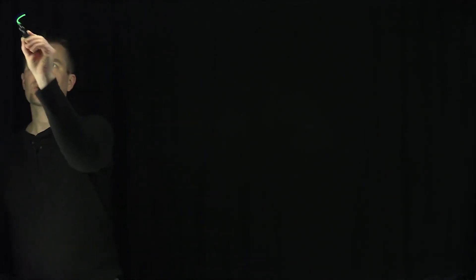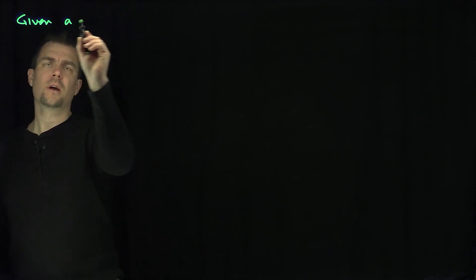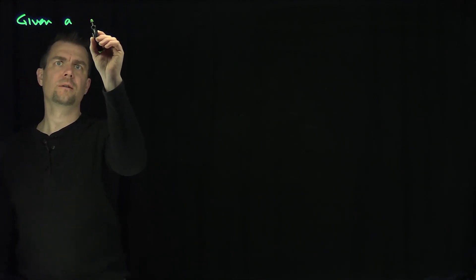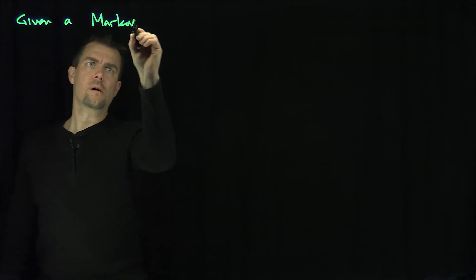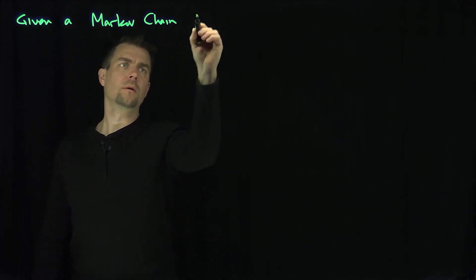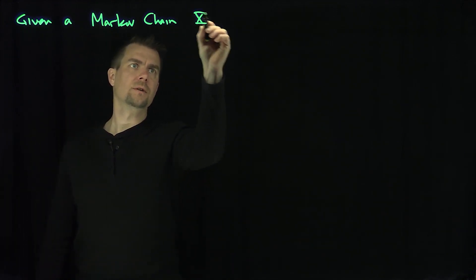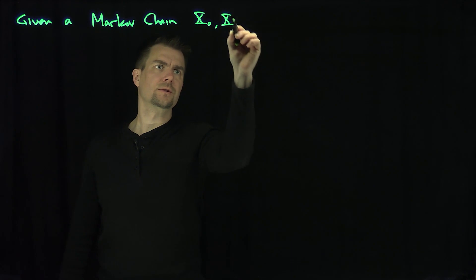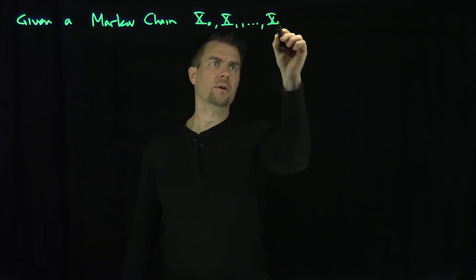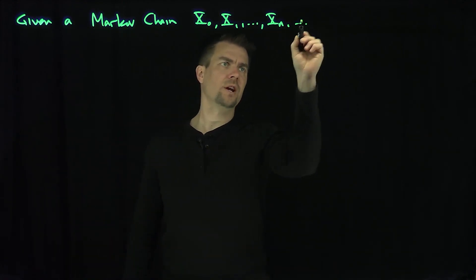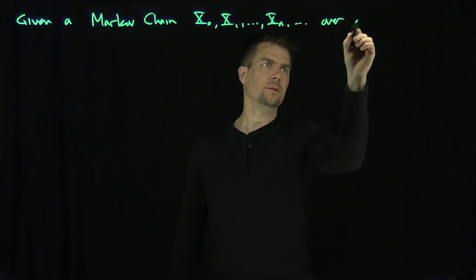Hello students. In this video we'll discuss the backward Kolmogorov equation for discrete Markov chains. So given a Markov chain x0, x1, all the way down to xn forever — there's my Markov chain over a state space.